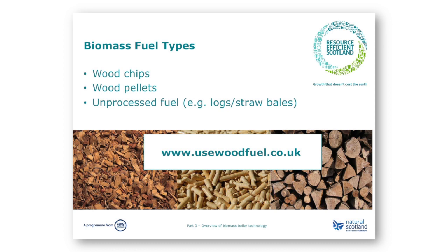A biomass boiler burns organic matter that is either grown as a fuel or from a clean waste stream, such as unwanted branches when a tree is harvested. For small and medium size installations up to around 1 megawatt, there are three main types of fuel: unprocessed fuel such as wood logs or straw bales, wood chips, and wood pellets. For larger installations, wood chip or wood pellets are the main types. Unprocessed fuels such as logs or straw bales are usually used in simpler batch-fed systems — mainly manually fed and supplying a large heat store — making them less suitable to many applications.